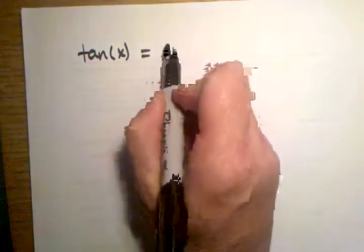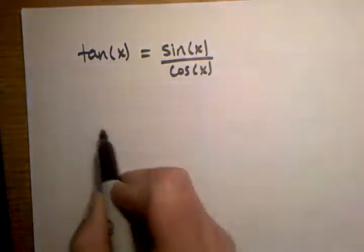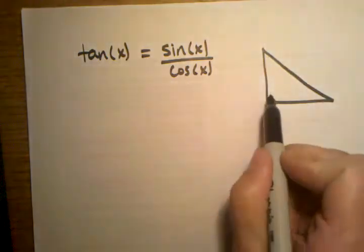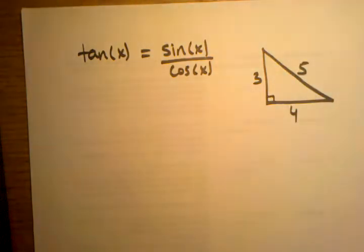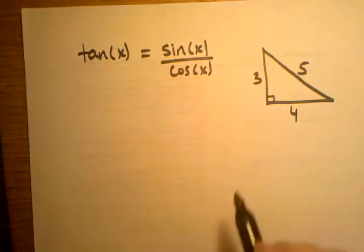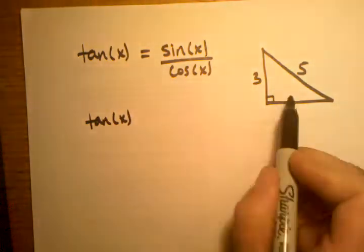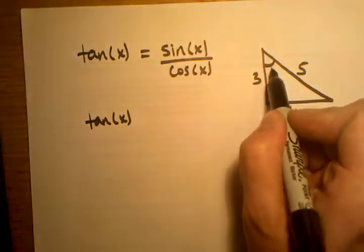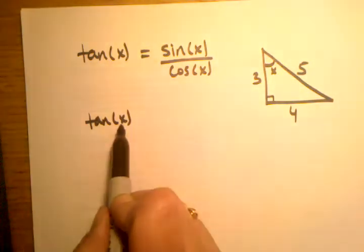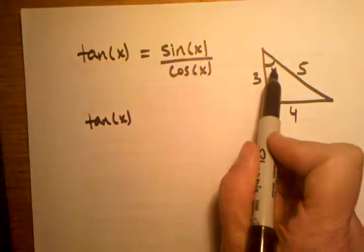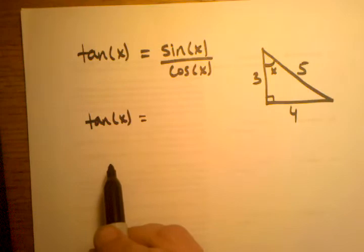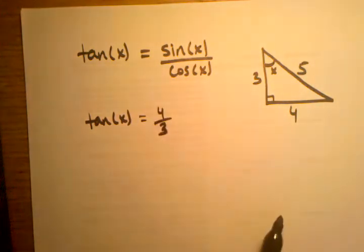Let's take the standard right triangle with sides three, four, and five. We know that's a right triangle — it's an easy one to work with. Let's talk about what the tangent of x is in this triangle. If we choose that angle and call it x, then the tangent of this angle would be opposite over adjacent, which is four-thirds.